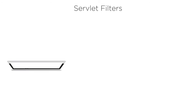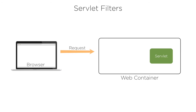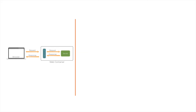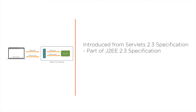In simple terms, using servlet filters we can stop the request and modify the request from the client before the request accesses the backend resources. Also, using filters we can manipulate the response from the server before it reaches the client. It is a new feature introduced in the Servlets 2.3 specification, originally part of the J2EE 2.3 specification.